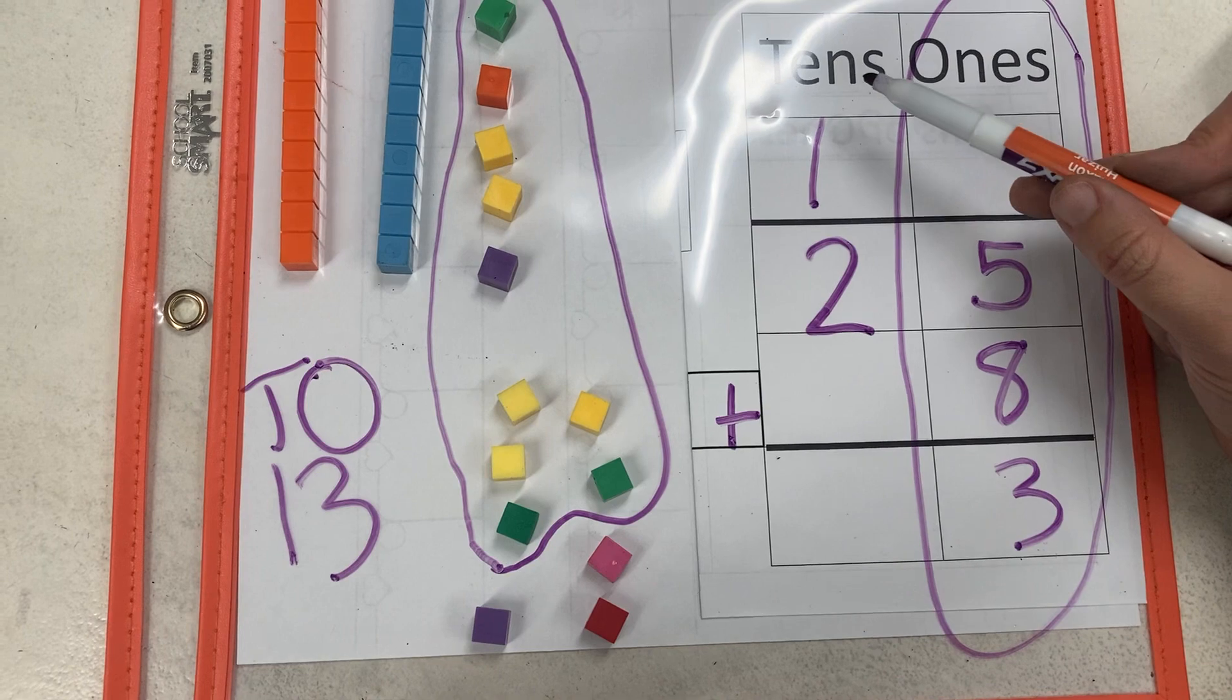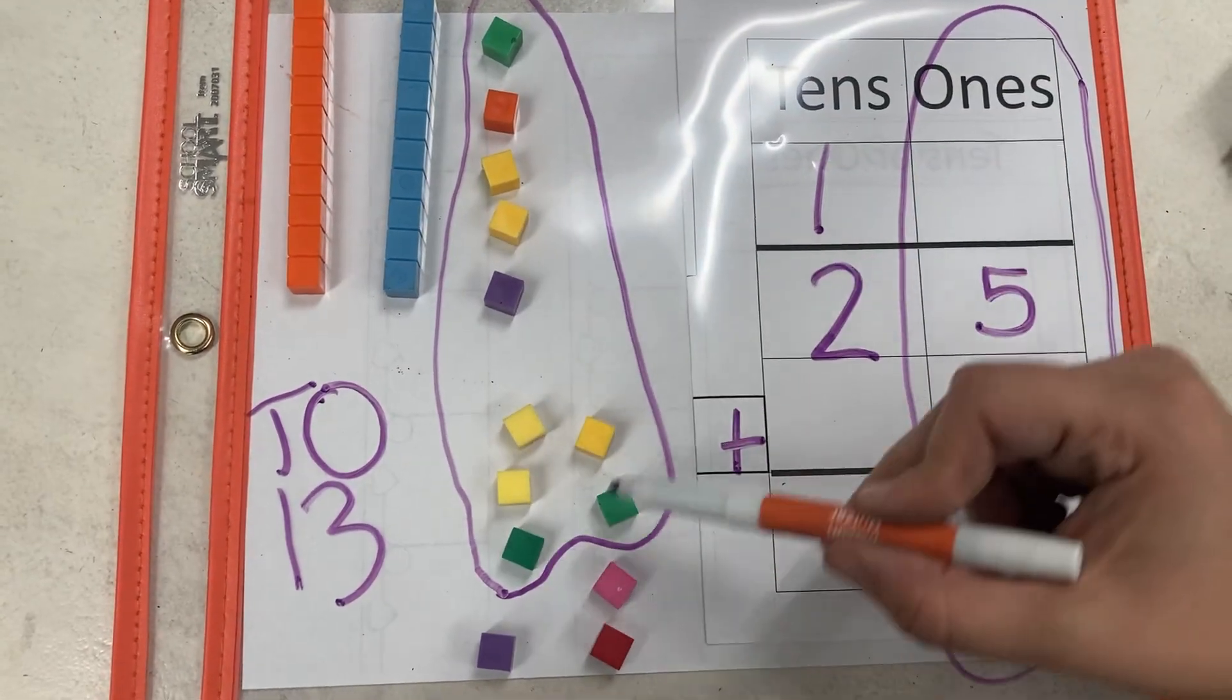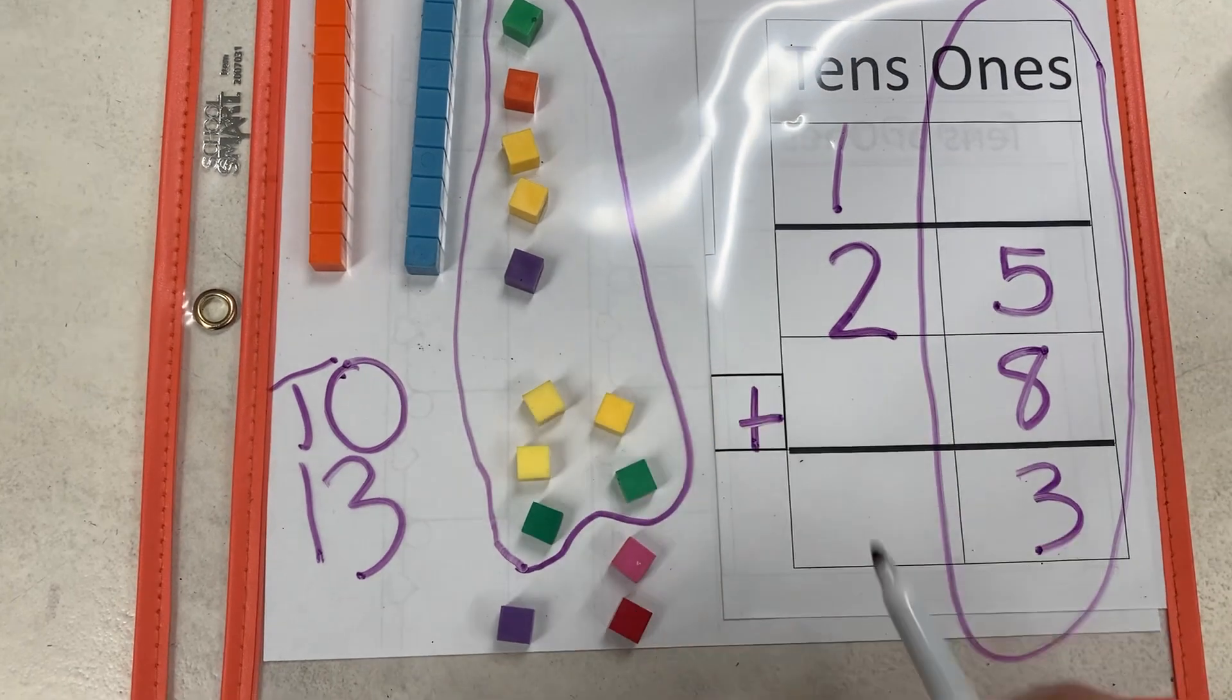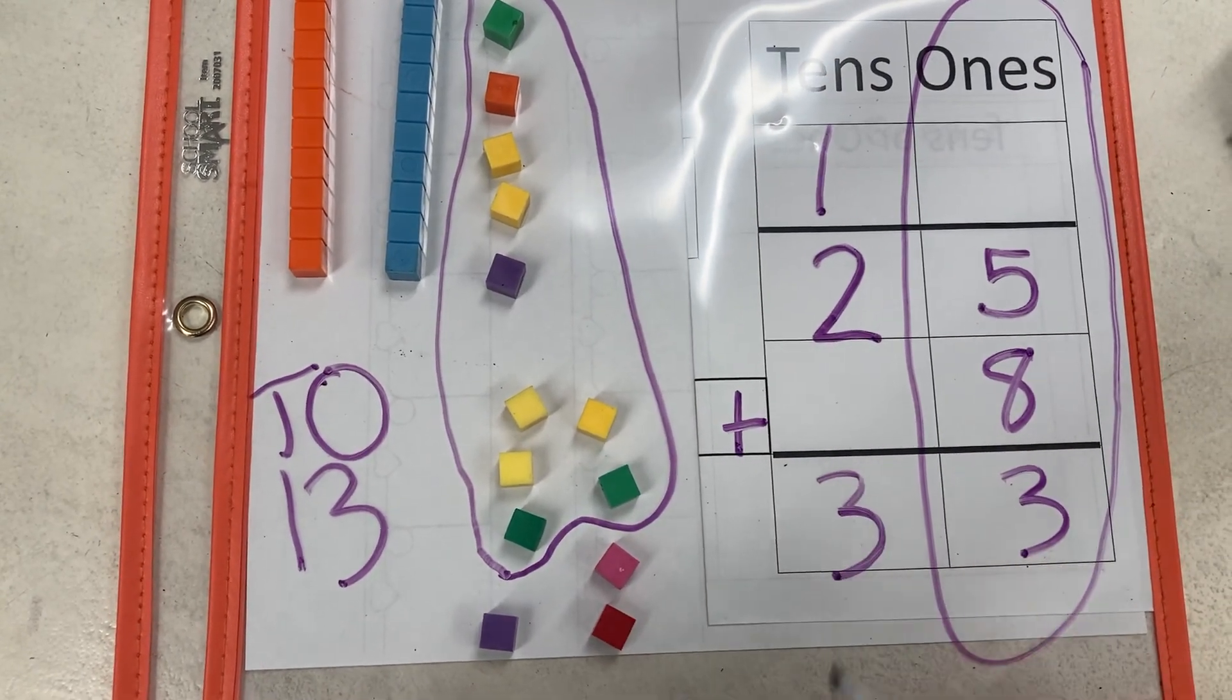Now I can add the tens. I have my one new 10 plus the two tens I already had. 2 plus one more is 3.